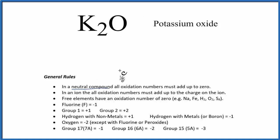So if we have a neutral compound, the oxidation numbers on all of these elements here need to add up to zero. So that's going to help us figure out the oxidation numbers on potassium oxide, K2O.